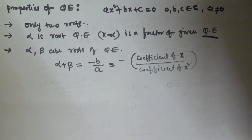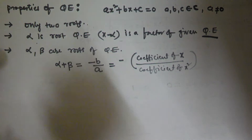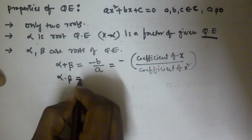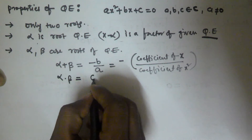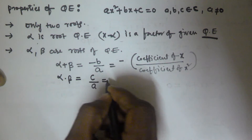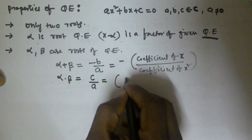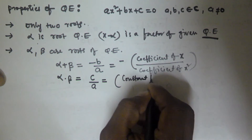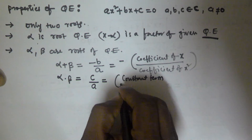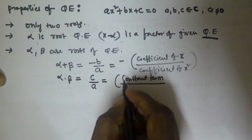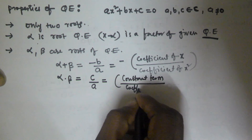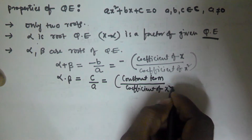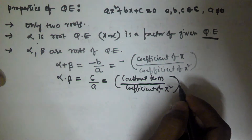In the same manner, the multiplication of the two roots — that is, alpha into beta — is equal to c by a. That is equivalent to the constant term divided by the coefficient of x squared.